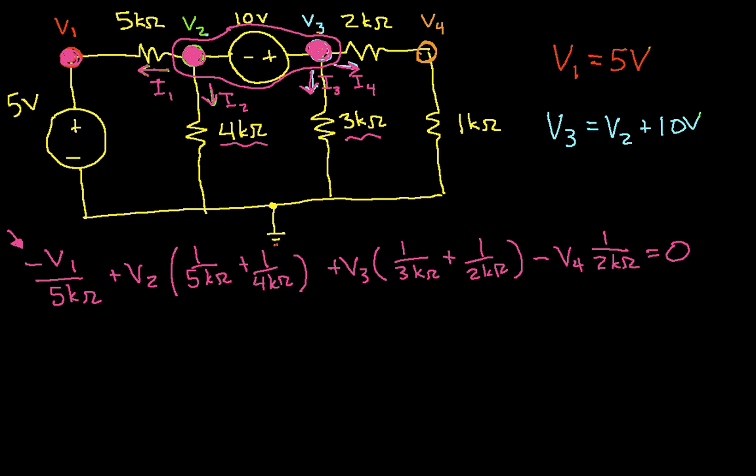The last thing to do is get an equation at node 4. That equation will be minus V3 times 1 over 2k ohms plus V4 times 1 over 2k ohms plus 1 over 1k ohm equals 0. So that is the set of equations we need. We have four unknowns, V1 through V4, and four equations in these four unknowns.